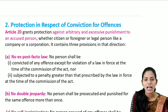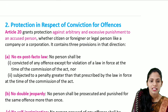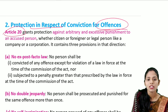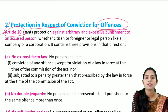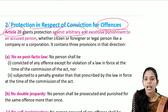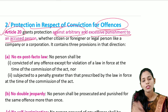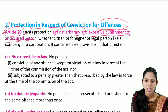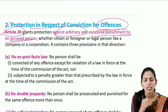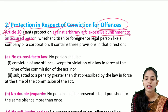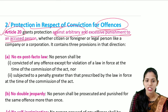Article 20 deals with protection in respect of conviction for offenses. It grants protection against arbitrary and excessive punishment of an accused person, and is available to both foreigners and citizens. It contains three provisions: no ex post facto law, no double jeopardy, and no self-incrimination.